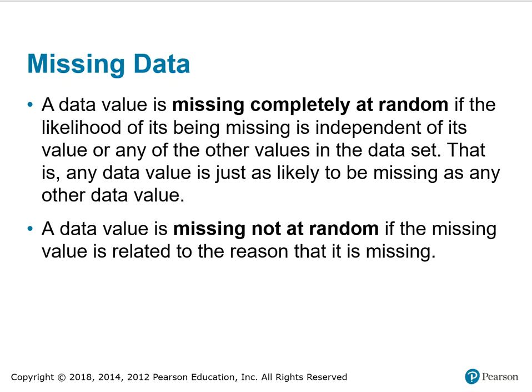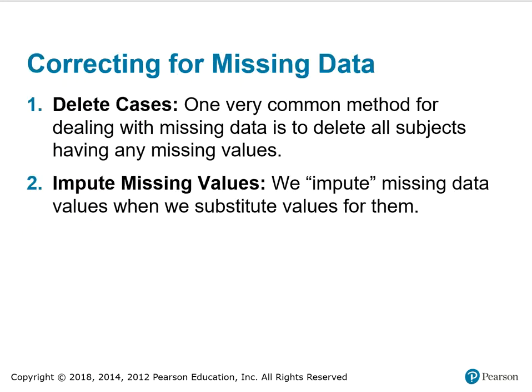Missing data: a data value is missing completely at random if the likelihood of it being missing is independent of its value or any of the other values in the data set — that is, any data value is just as likely to be missing as any other. A data value is missing not at random if the missing value is related to the reason it is missing. One very common method for dealing with missing data is to delete all subjects having any missing values. Another approach is to impute missing values by substituting values for them.